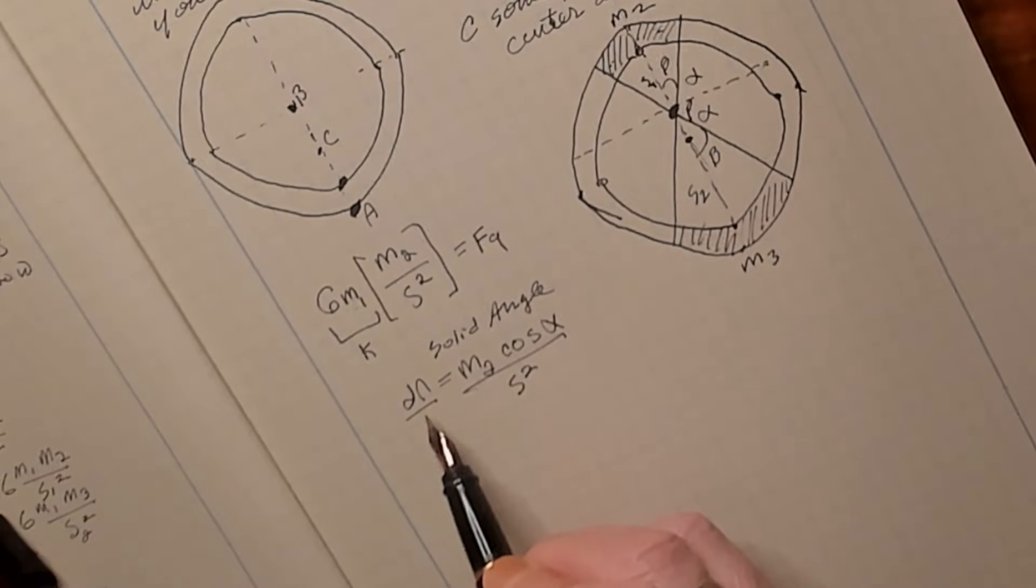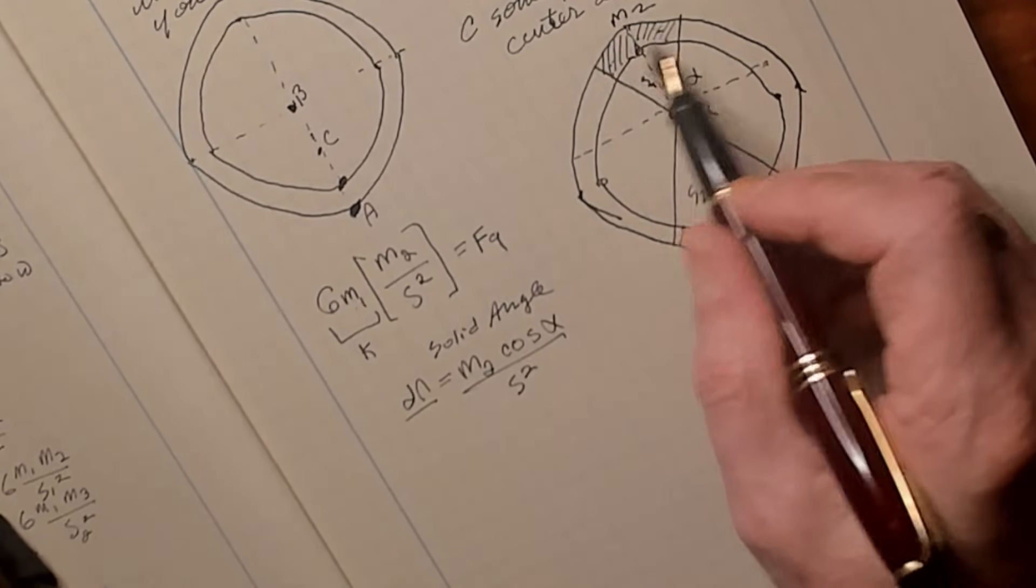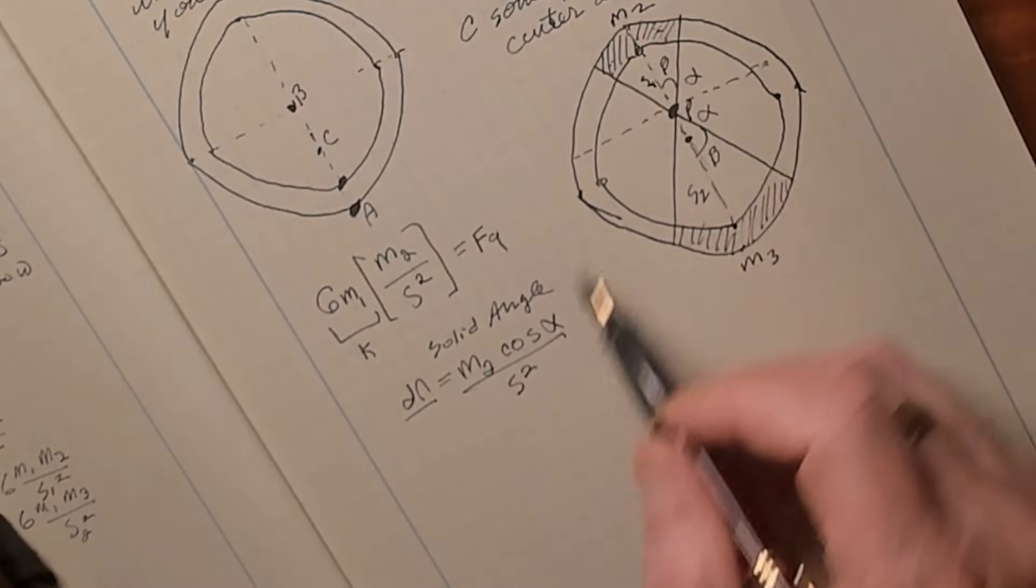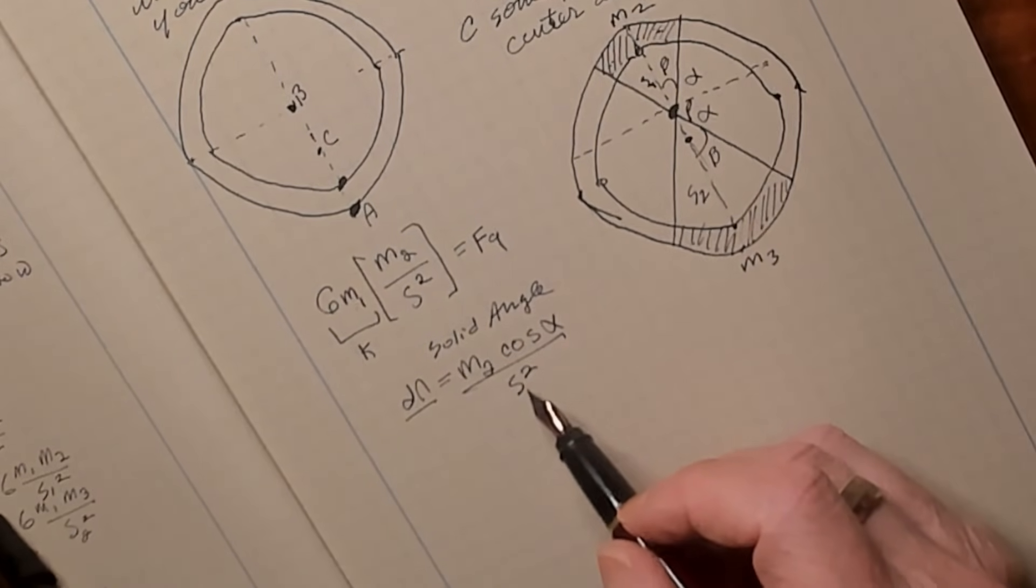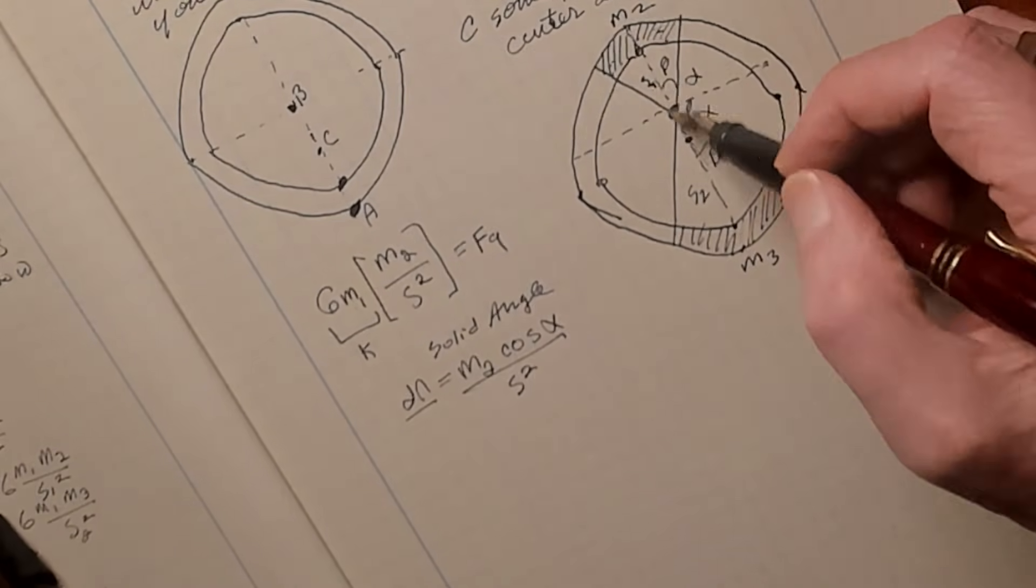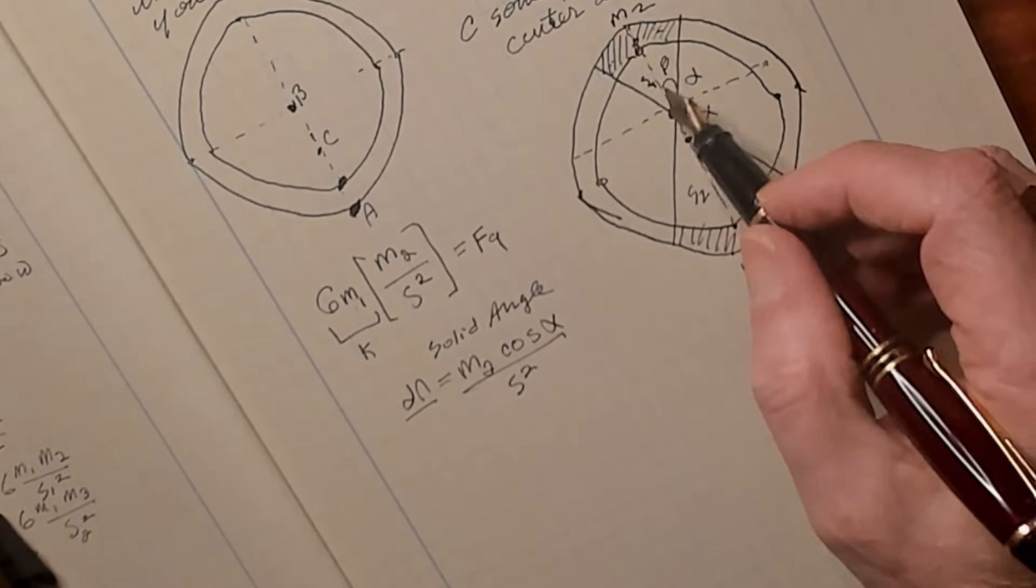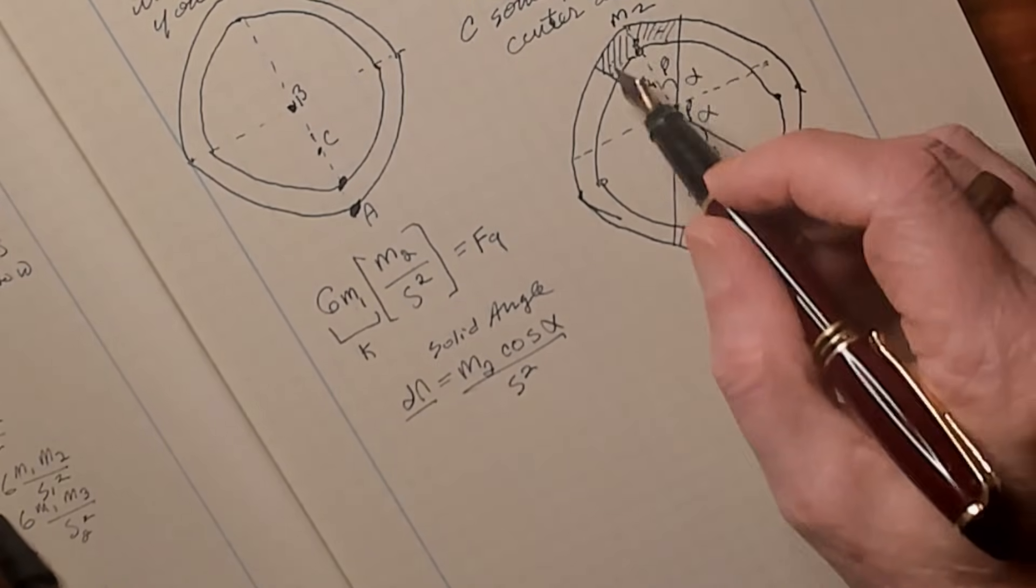So to calculate what your solid angle is, which is this delta omega, you take the mass of this area, this bottle cap here, times the cosine of alpha, divided by the distance squared, in this case s1. And that goes from the point to the center of mass of this area.